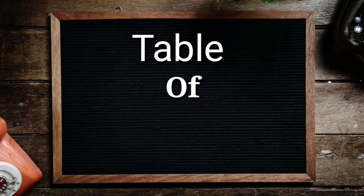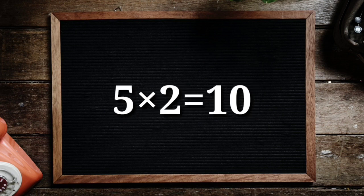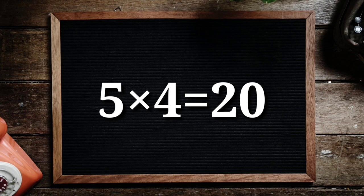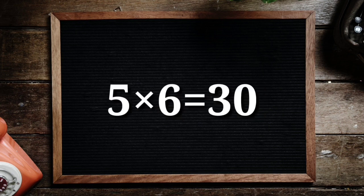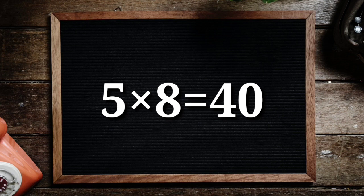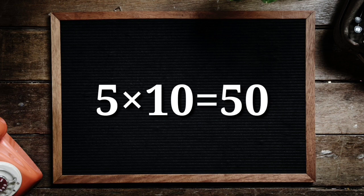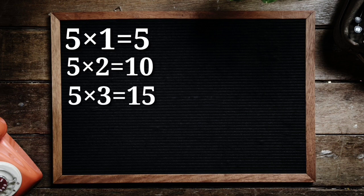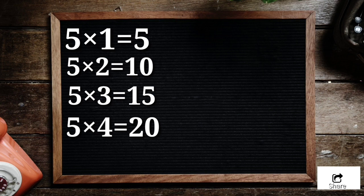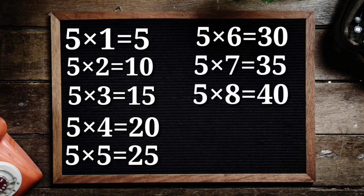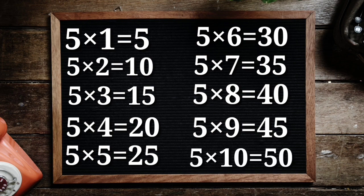Table of 5. 5 1's are 5, 5 2's are 10, 5 3's are 15, 5 4's are 20, 5 5's are 25, 5 6's are 30, 5 7's are 35, 5 8's are 40, 5 9's are 45, 5 10's are 50. 5 1's are 5, 5 2's are 10, 5 3's are 15, 5 4's are 20, 5 5's are 25, 5 6's are 30, 5 7's are 35, 5 8's are 40, 5 9's are 45, 5 10's are 50.